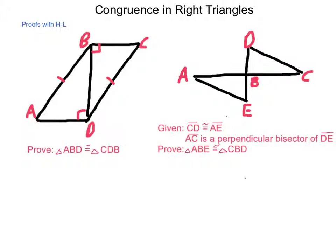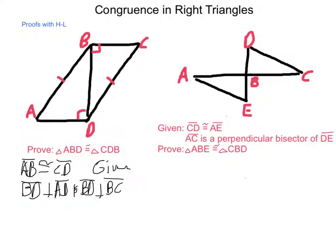And the way we're going to do this is as such. We will begin by making the statement that, as marked, line segment AB is congruent to line segment CD. And that's a given. That line segment BD is perpendicular to AD and BD is perpendicular to BC. And that's also a given.